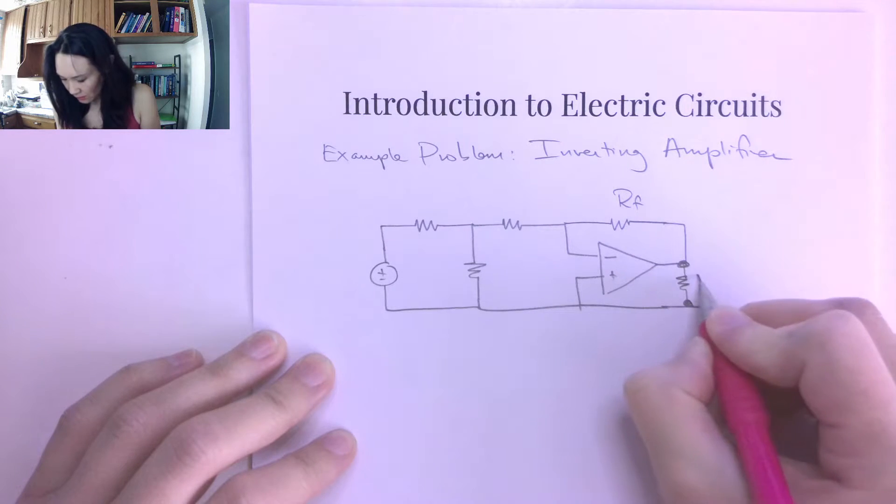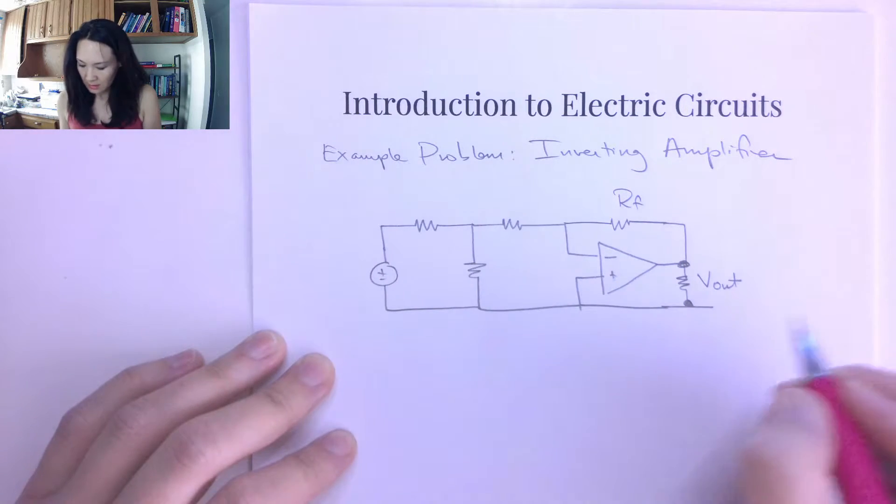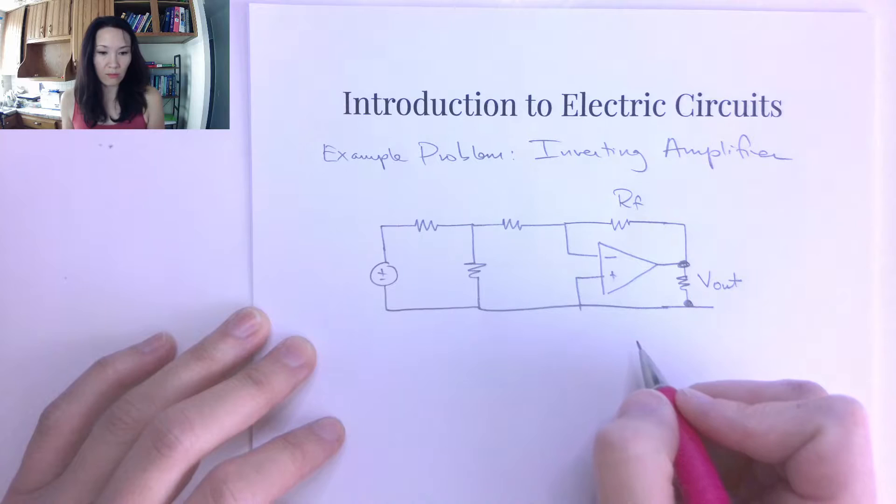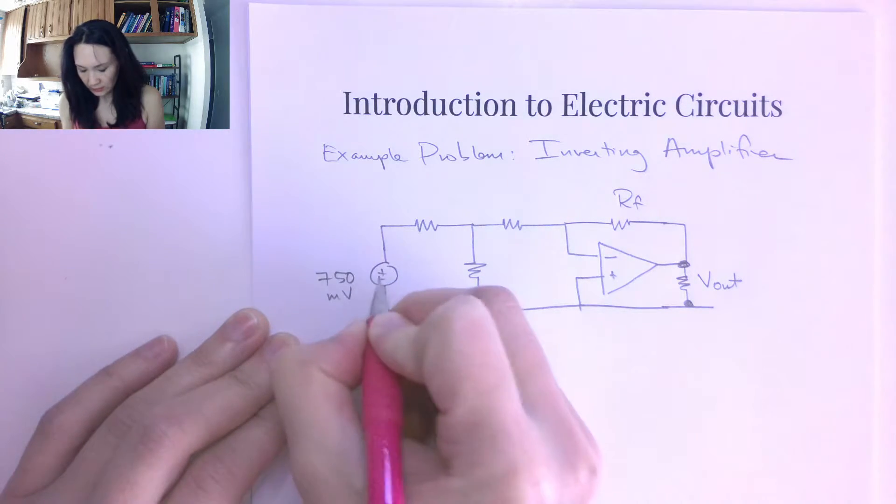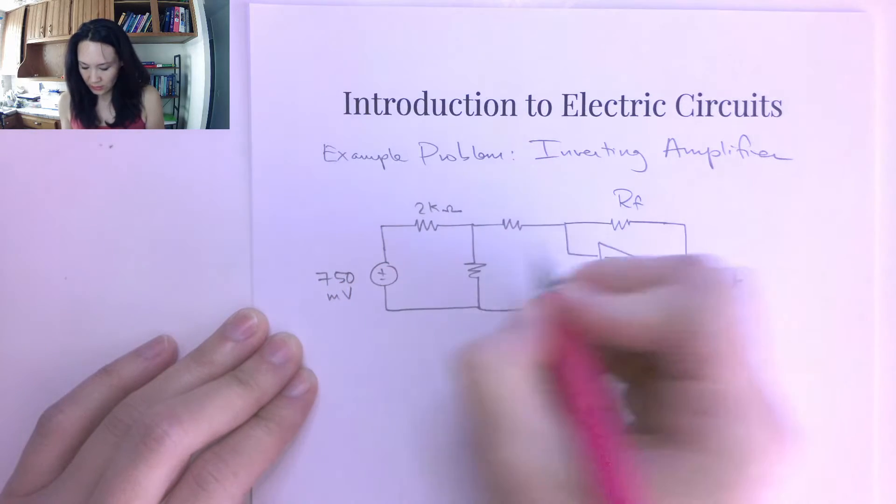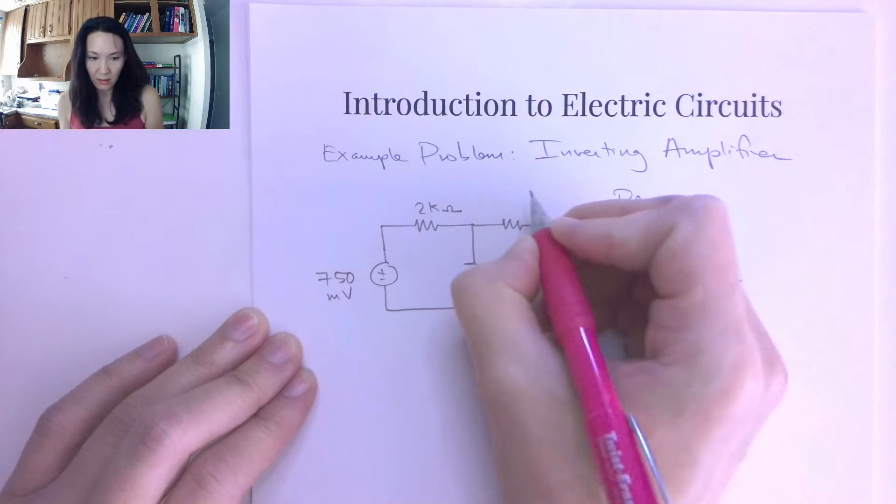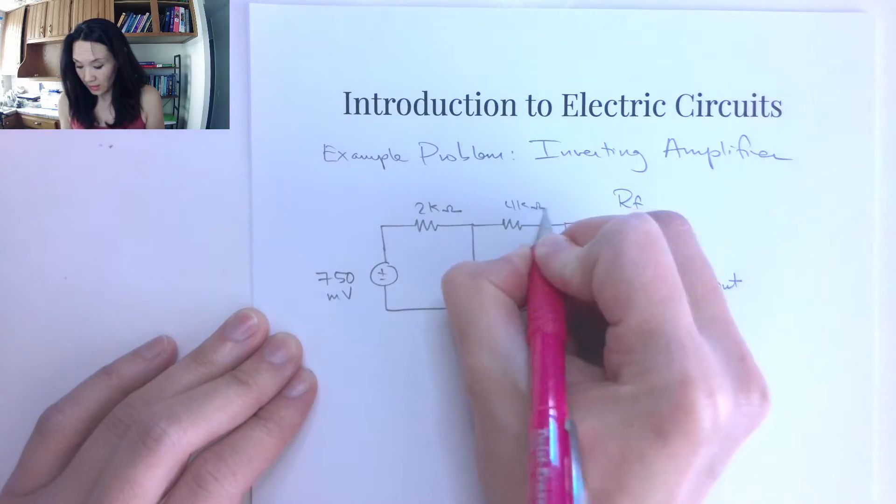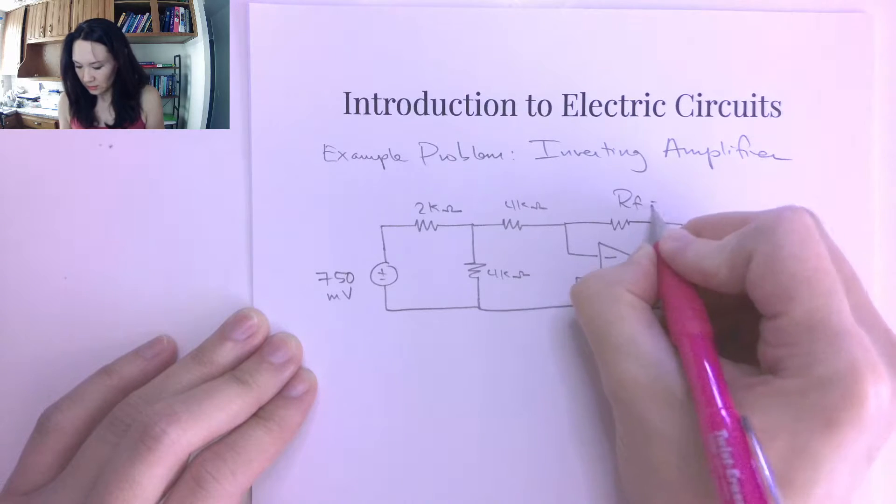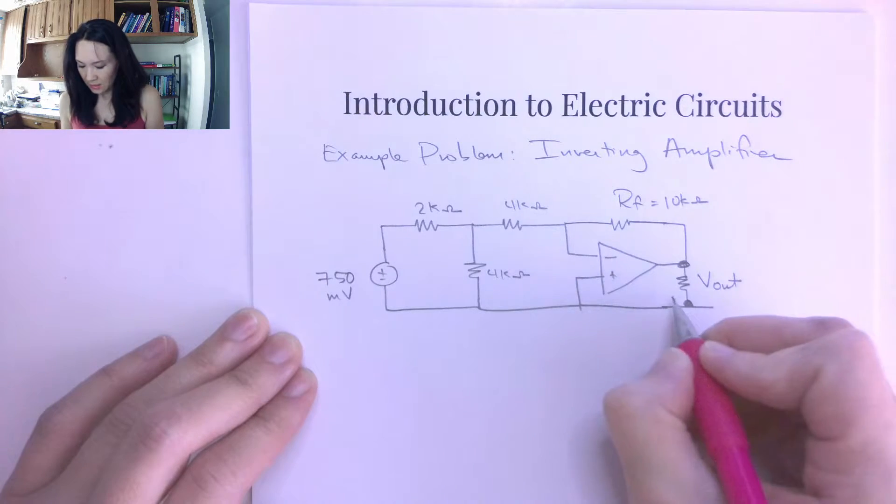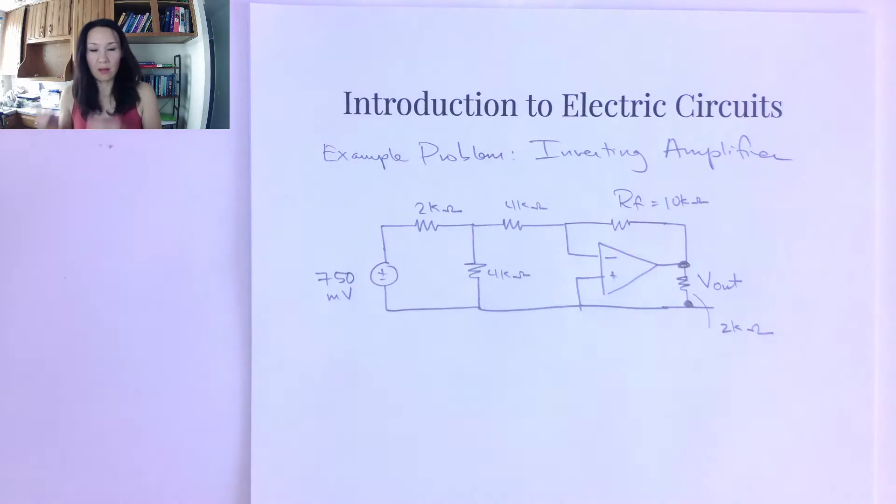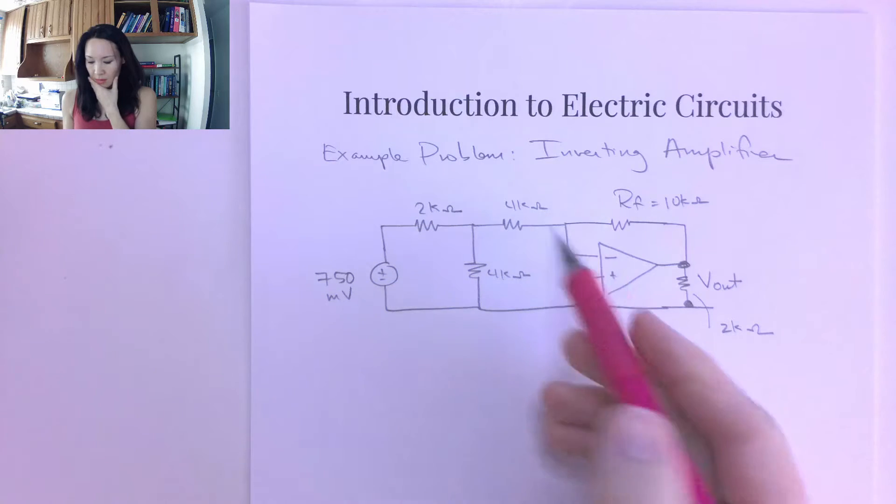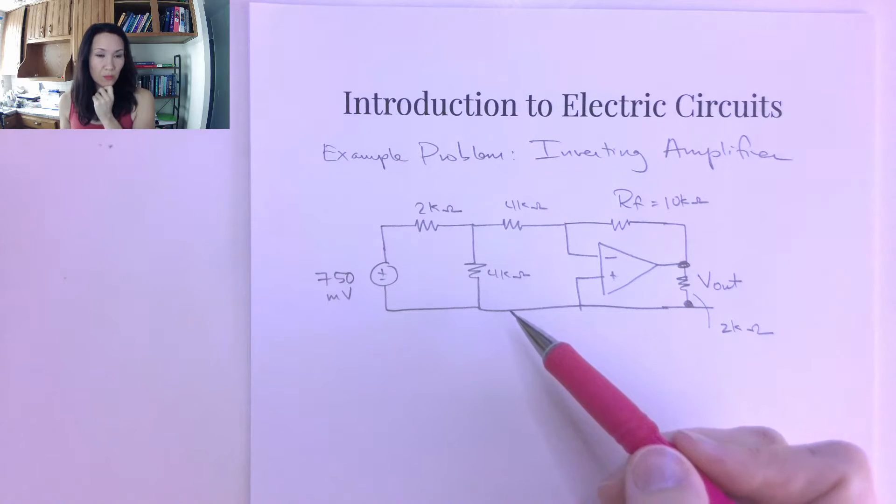And then between here and here, the voltage drop across this output resistor here is going to be Vout. So let me put in some values here. Let's say that this is a 750 millivolt source, and we've got a 2k ohm resistor here, a 4k ohm resistor here. Suppose this is also 4k ohms. And our feedback resistor, let's say this one is 10k ohms. And then our output resistor here, let's let this be 2k ohms. Okay, so there is, there's a little bit more going on here than our previous example. So what do we do?